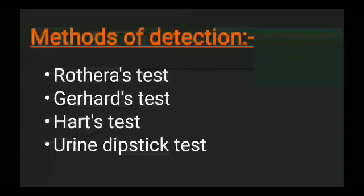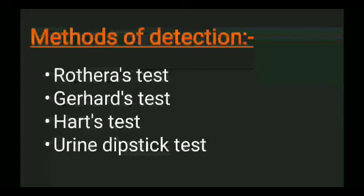The methods to detect ketones in urine include: first, Rothera's test — a highly sensitive test used to detect ketone bodies in urine. It can detect two ketone bodies: acetone and acetoacetic acid. Other methods include Girard's test, Hart's test for beta-hydroxybutyric acid detection, and the urine dipstick test.